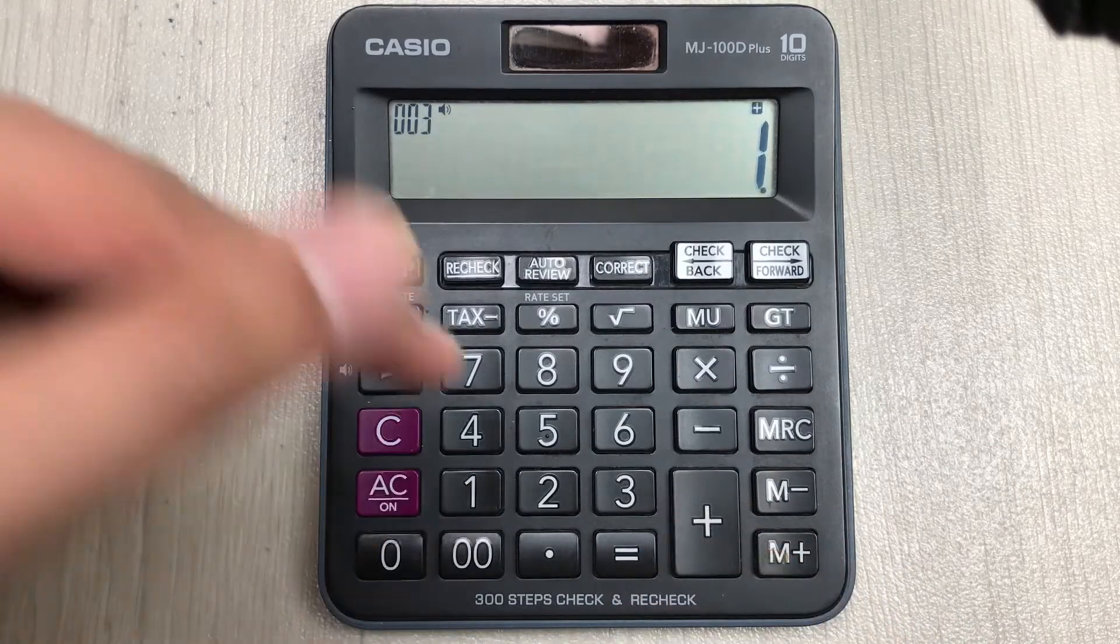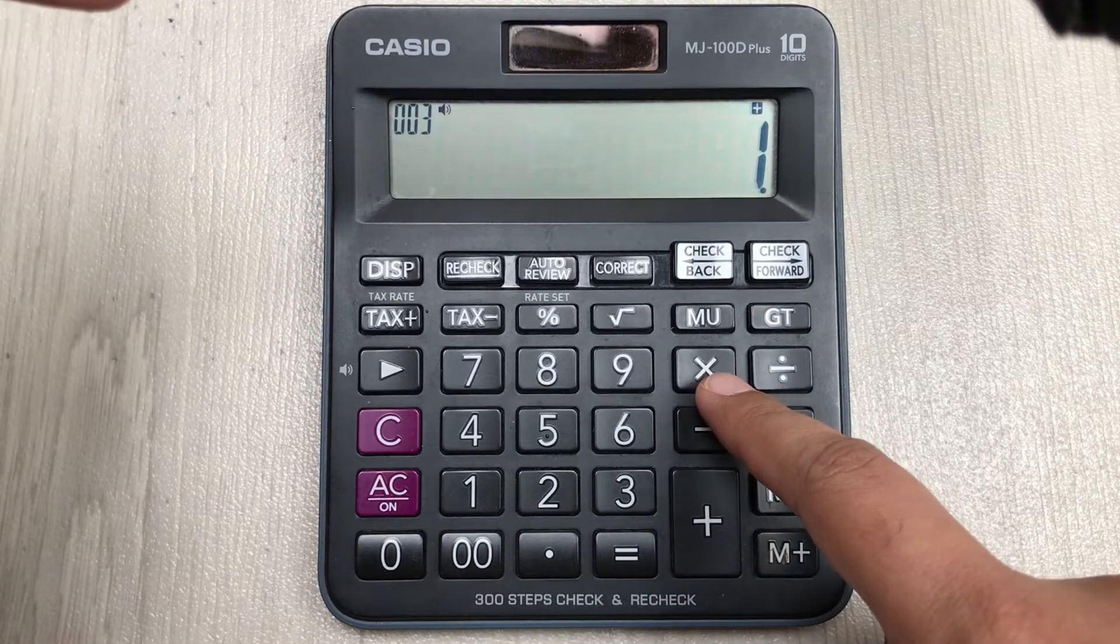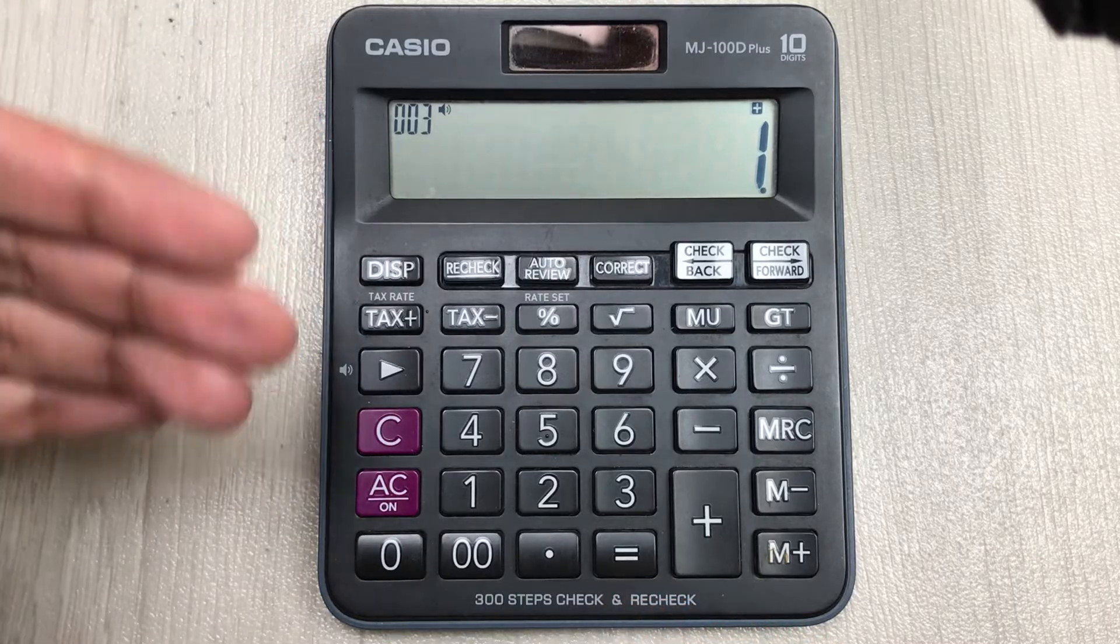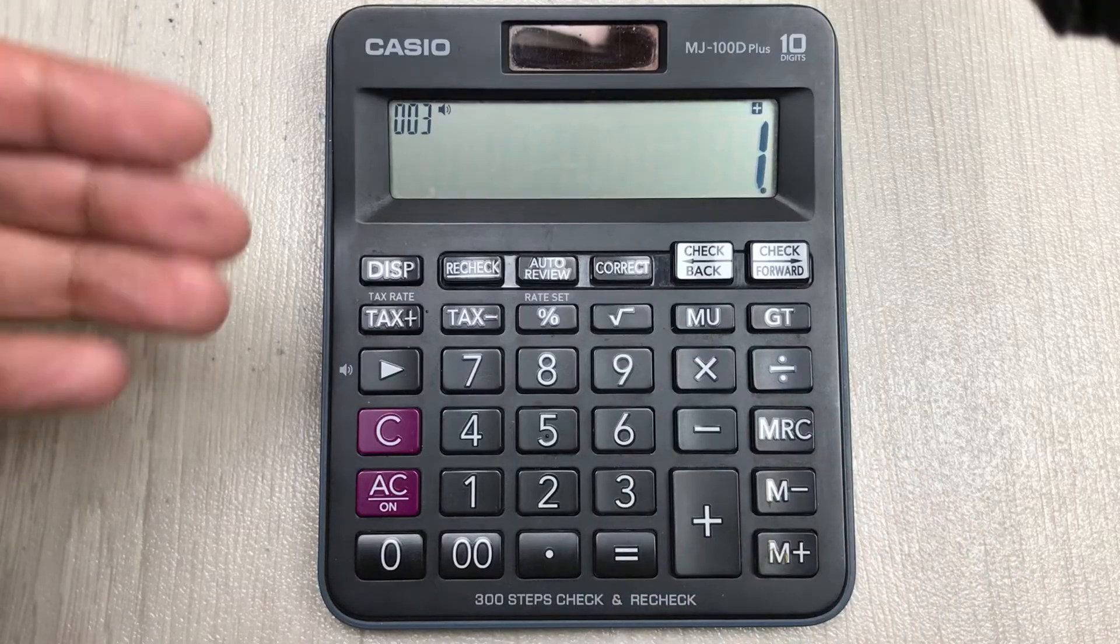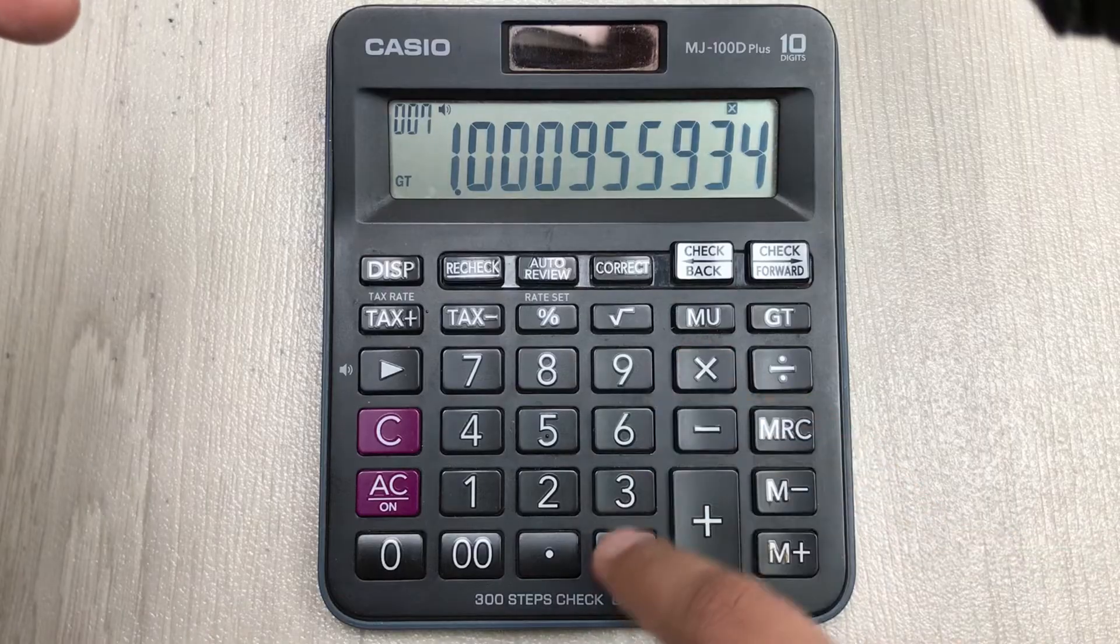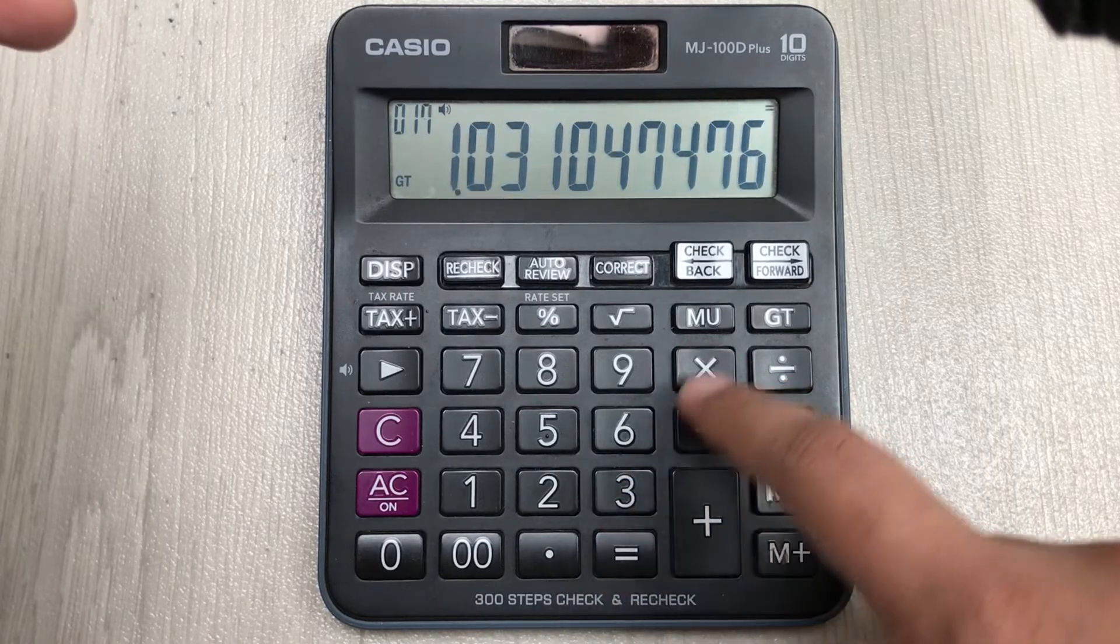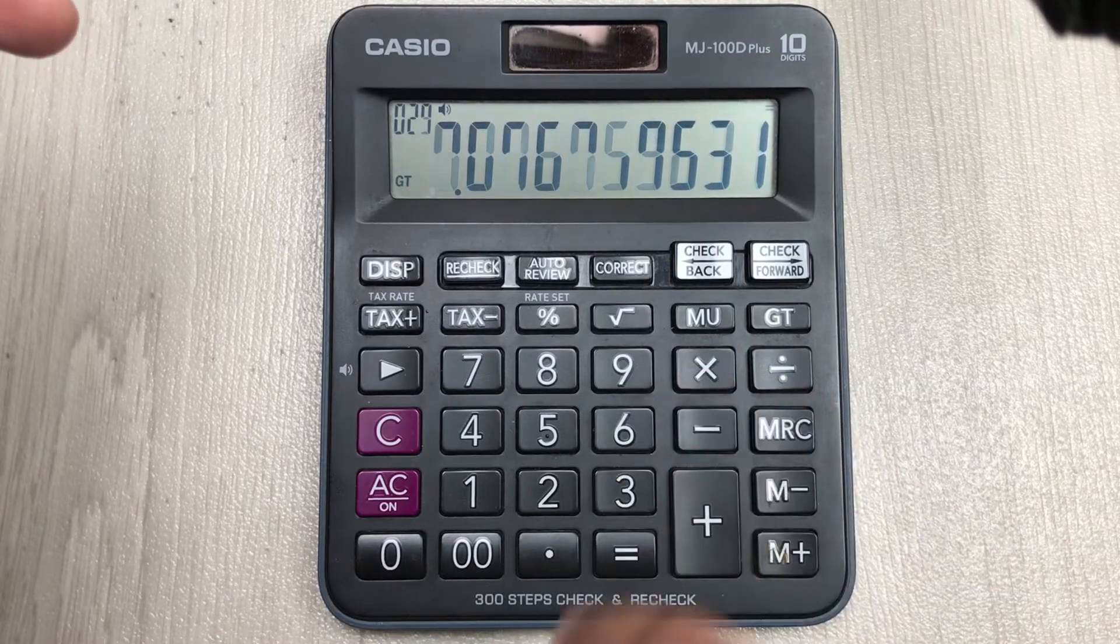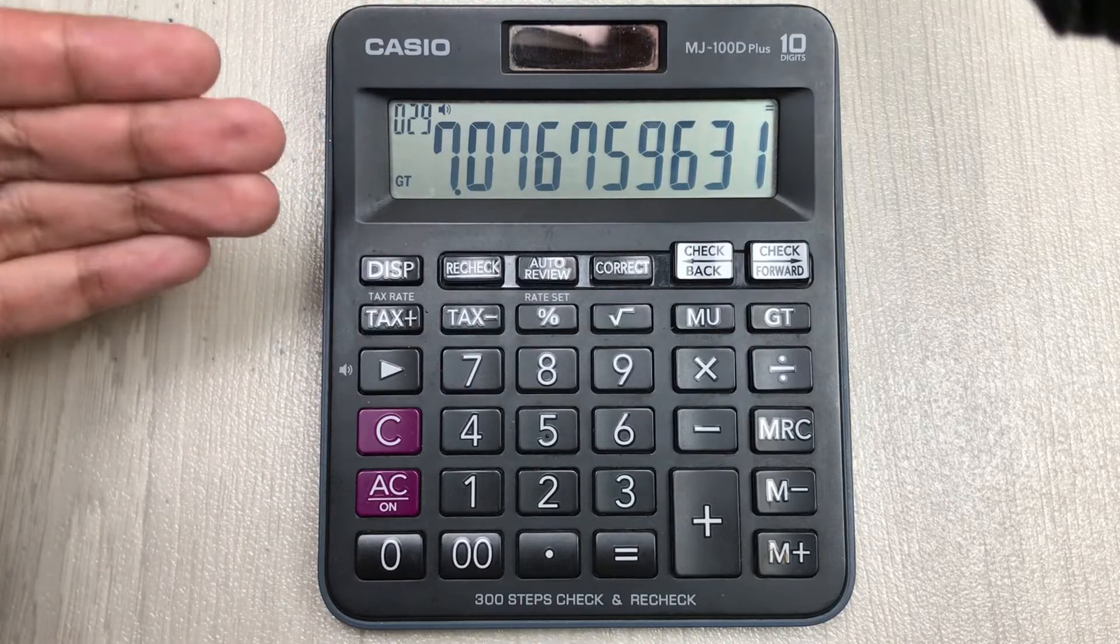In the last step we have to press this multiply button and this equal buttons together for 13 times. Let's start: 1, 2, 3, 4, 5, 6, 7, 8, 9, 10, 11, 12, 13. Here is our final answer. This is the natural logarithm of 0.850.